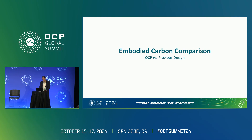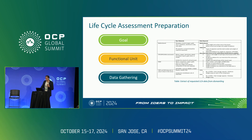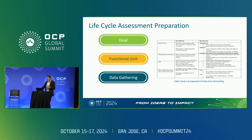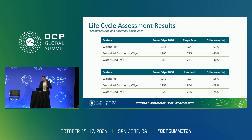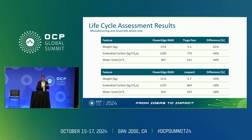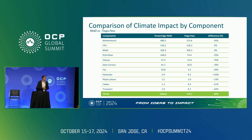Now that we've seen the different design choices and weight reductions, the next step is the lifecycle assessment. We manually dismantle all four types of servers shown, doing precise assays specifically on the PCBs because there's a huge difference regarding precious metals in the PCBs. The results show that about 30 to 40 percent of emissions can be avoided with OCP servers, mainly driven by reduced weight and the material savings from complexity reduction in their design.